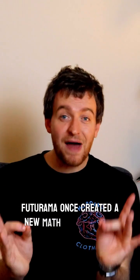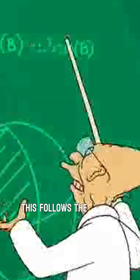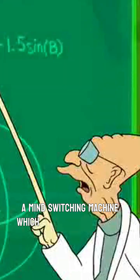Futurama once created a new math theorem just for their TV show. In one episode of the show called The Prisoner of Bender, this follows the plot of the professor having a mind switching machine which many characters use during the course of the episode.